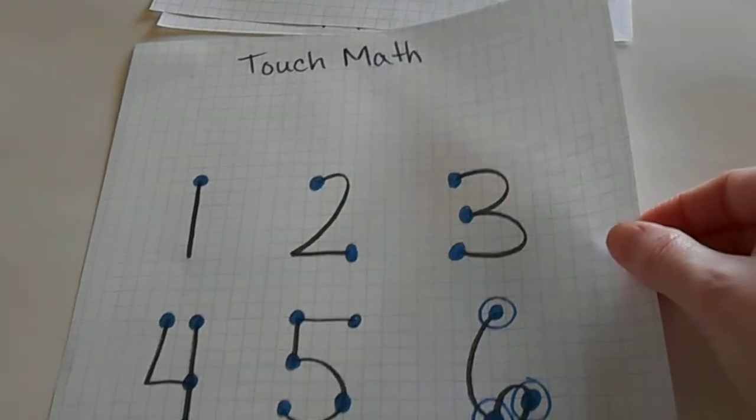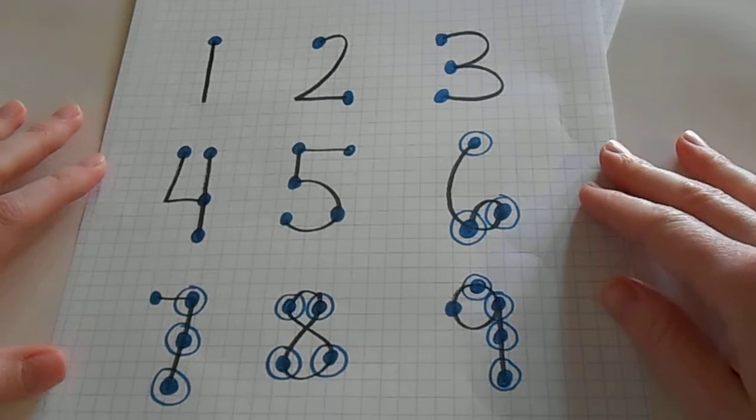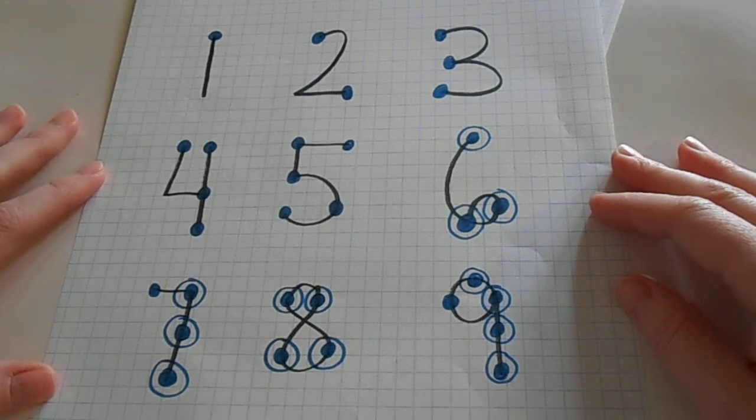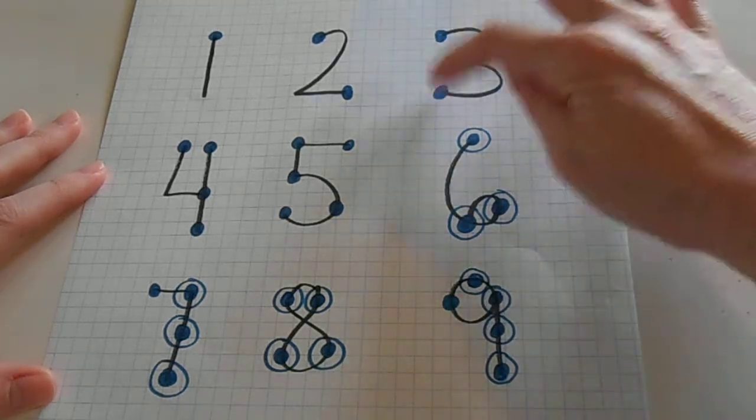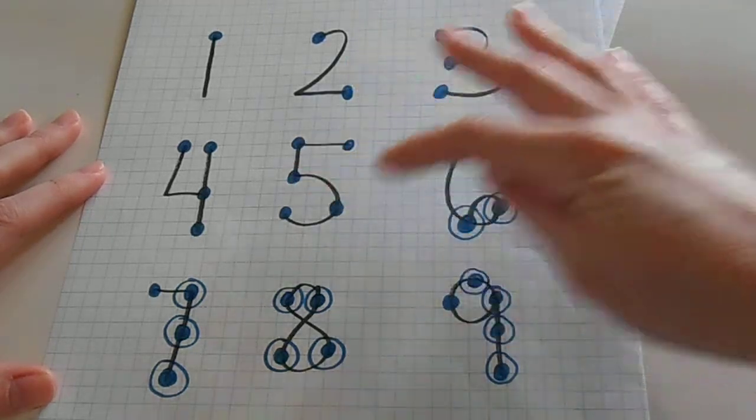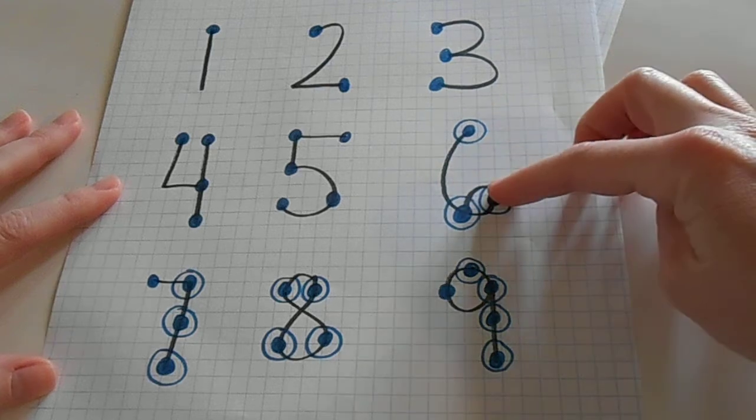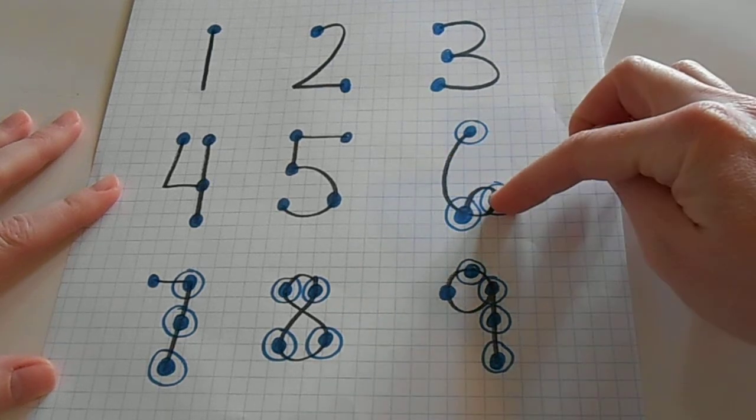So as you can see, I have my numbers listed here, one through nine, and they have dots on them corresponding to the number that each digit is worth. So I have three dots on the three, five dots on the five, and then these bigger numbers, as you can see, are a little bit different.